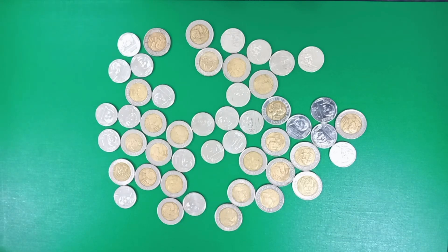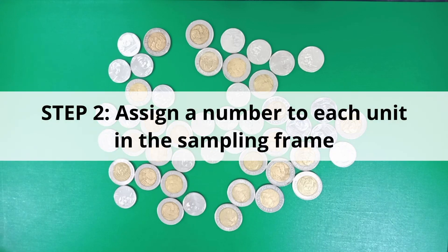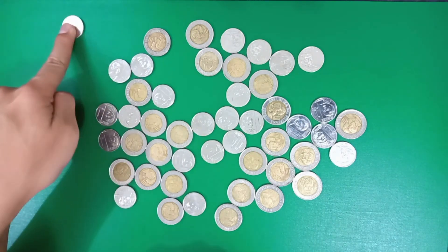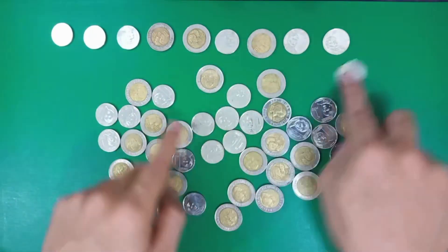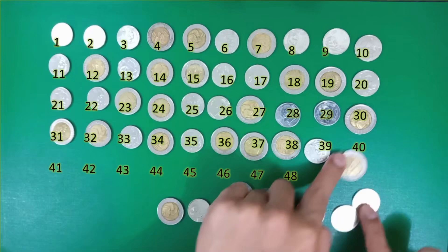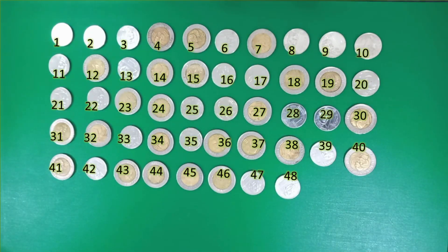After obtaining our sampling frame, we then assign each sampling unit sequential numbers from one all the way to N, where N is equal to the size of our sampling frame. In this case, 24 big dots plus 24 small silvers equals 48. So we assign this as coin number one, then two, then three, four, five, and so on. The order of assignment can be arbitrary, but most studies use official lists from available sources, and in most cases it shouldn't matter.